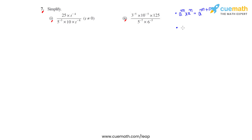The second law is: a raised to m divided by a raised to n equals a raised to m minus n. When the bases are the same and they are in division, the powers get subtracted.